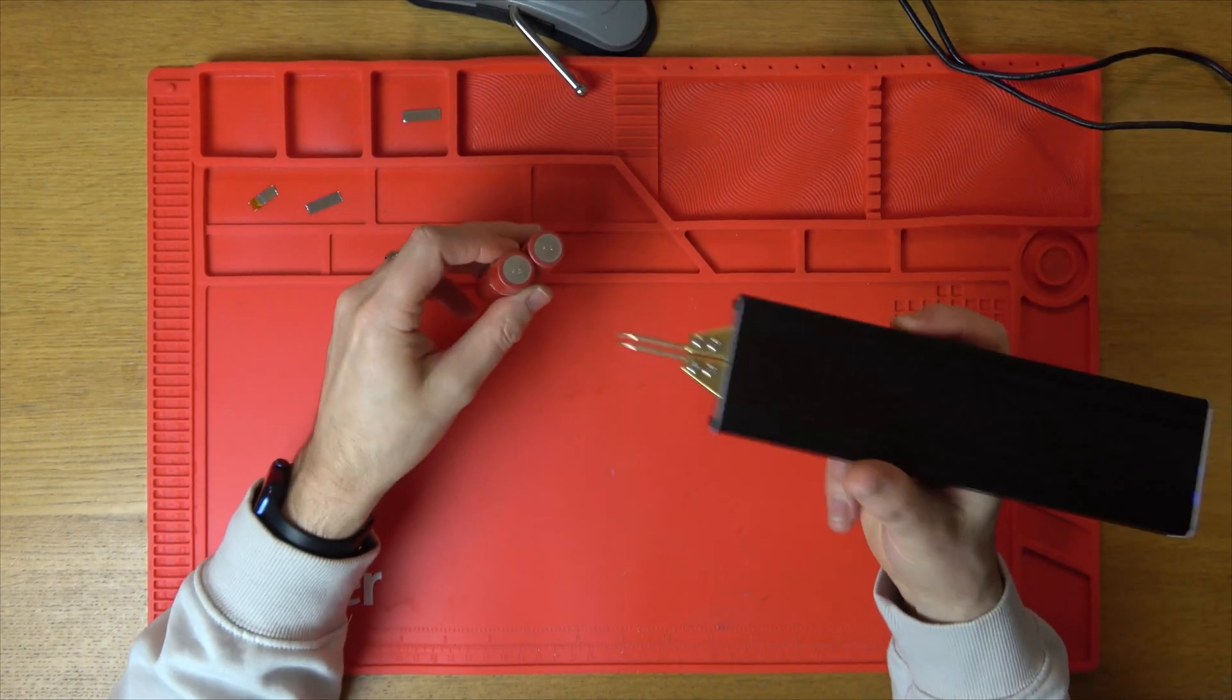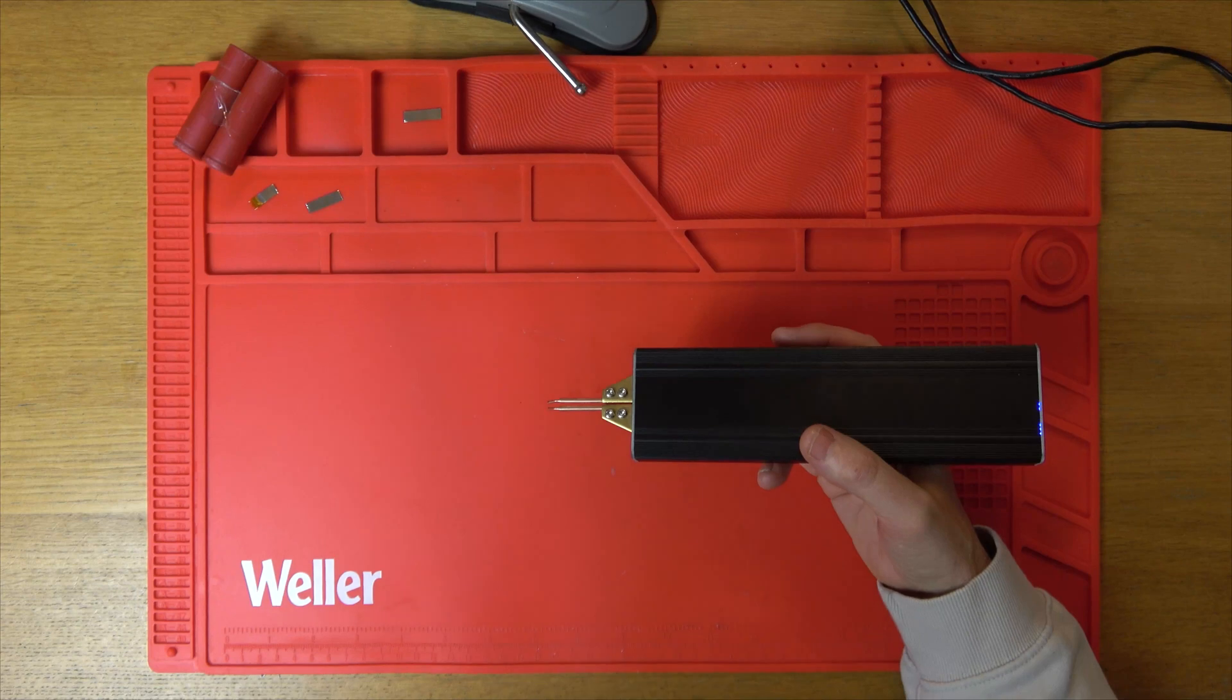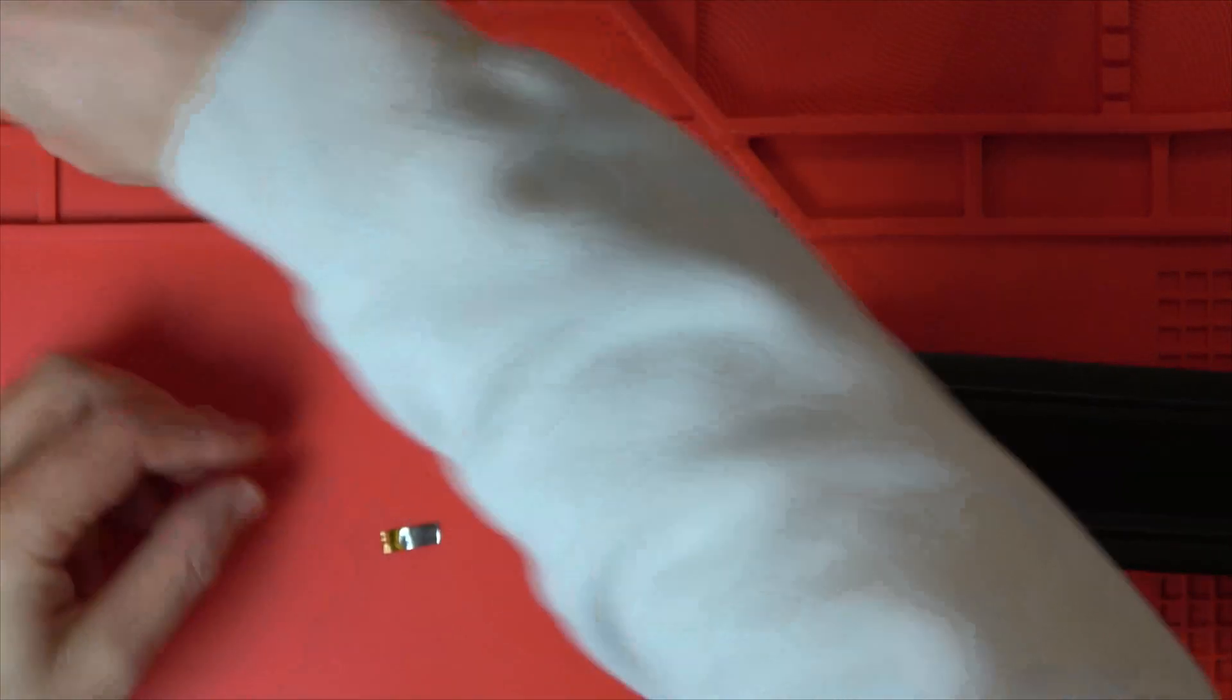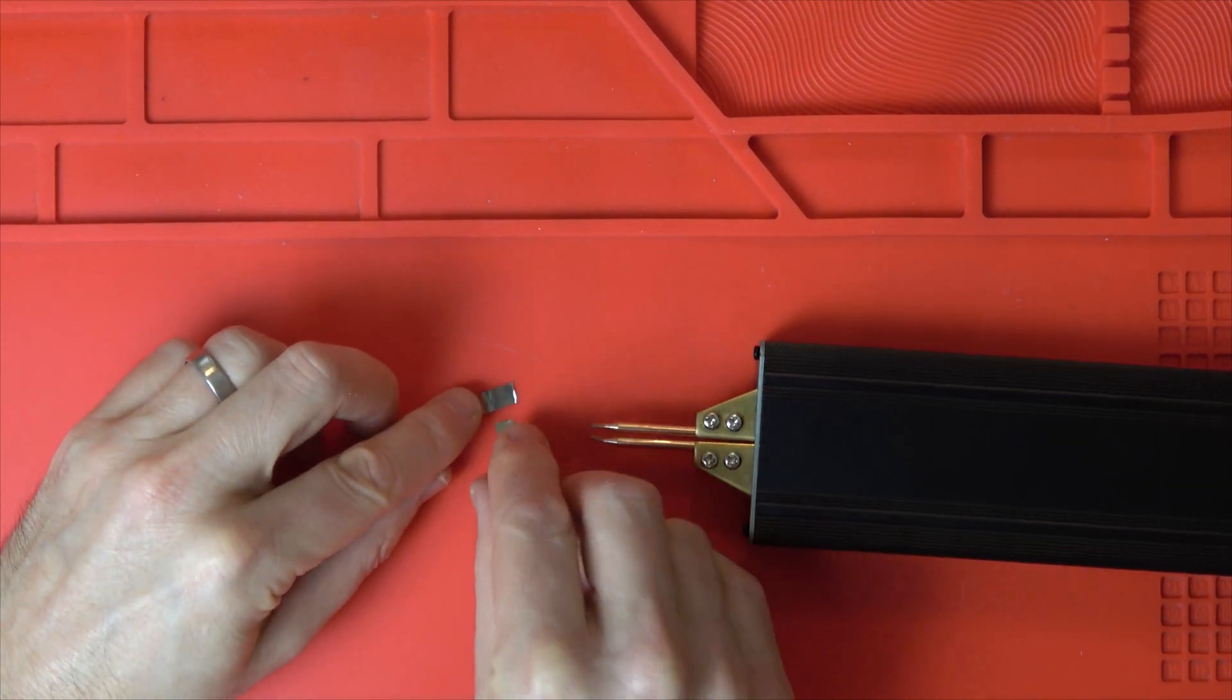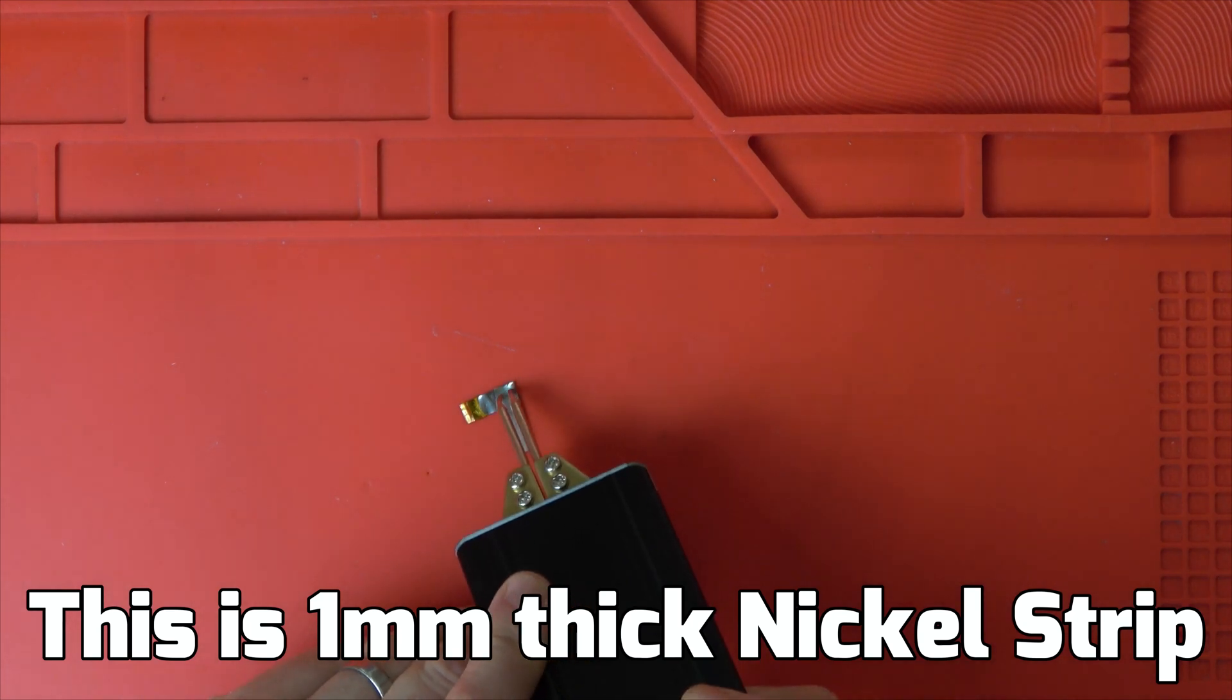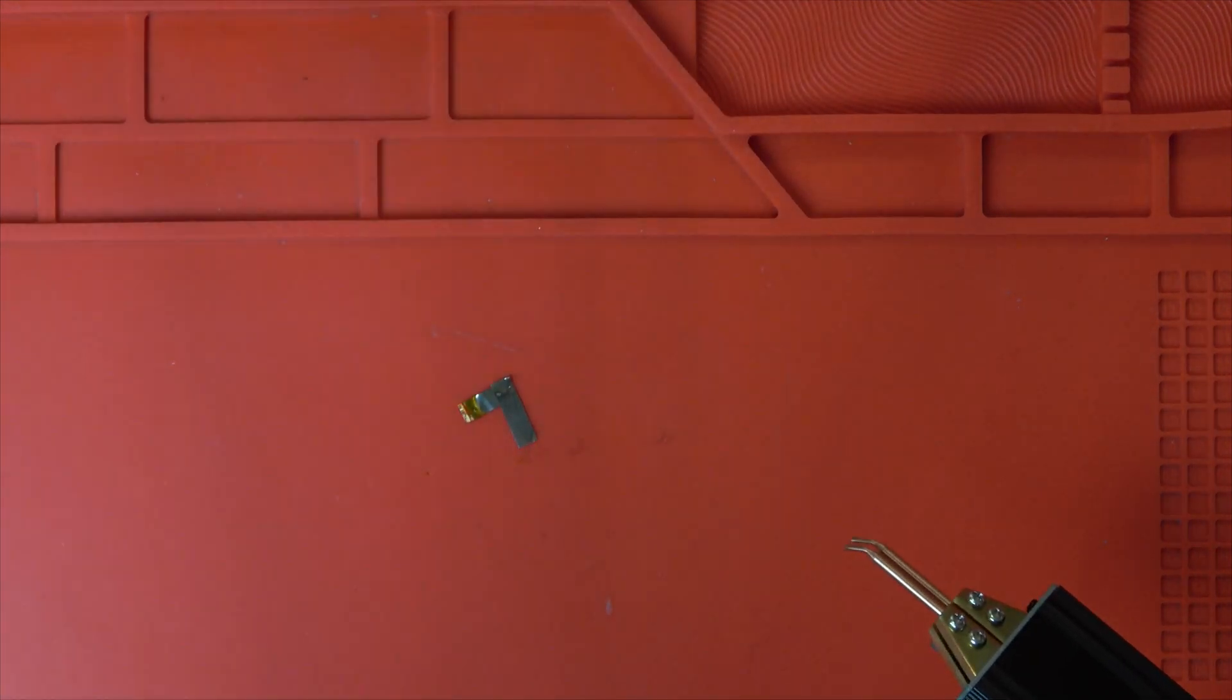Basically when it's on it detects when it's on something and then it will spot weld. Let me just quickly show you just these two little bits of nickel here and it's on setting 3. So if we line them up here and we put pressure downwards, there we go and you can see now just like that it's spot welded.